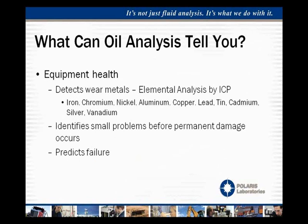We also look at equipment health, which involves examining wear metals — the elements that compose the alloys that components are made of. We'll look at things such as iron, chromium, nickel, aluminum, copper, lead, tin, cadmium, silver, and more. We don't necessarily look at one specific element; when we see a combination of elements indicative of a specific alloy in the system and those trend upward, we can get a good idea of what specific component is wearing. This can identify small problems before serious damage occurs, and it can be used to predict failures — in more advanced cases, correlating to past failure information to predict exactly when a component will fail based on current trending, so repairs can be made before failure takes place.